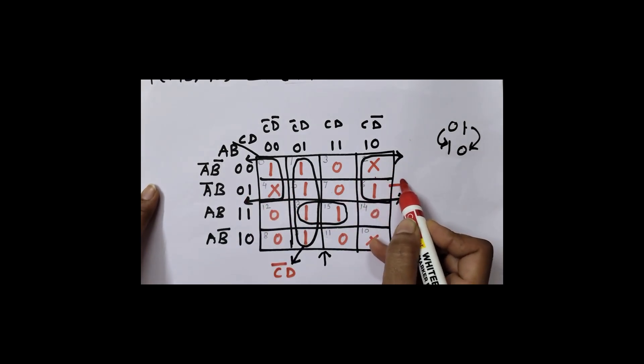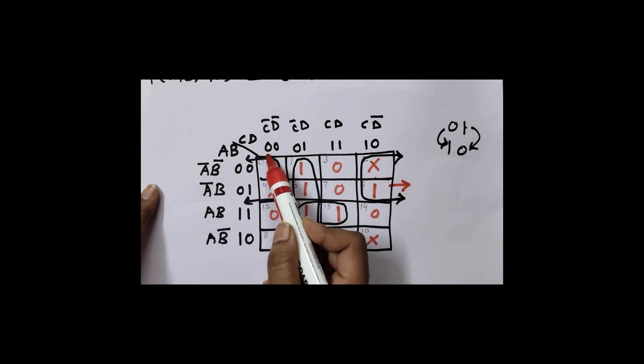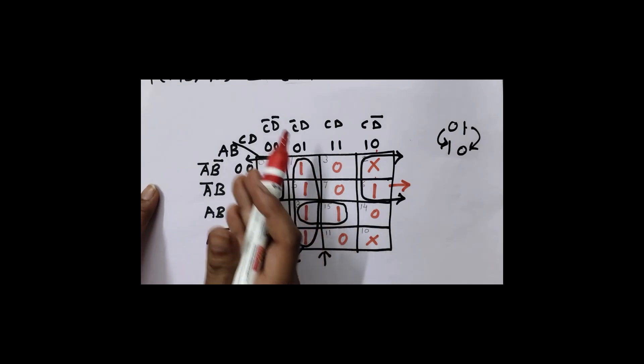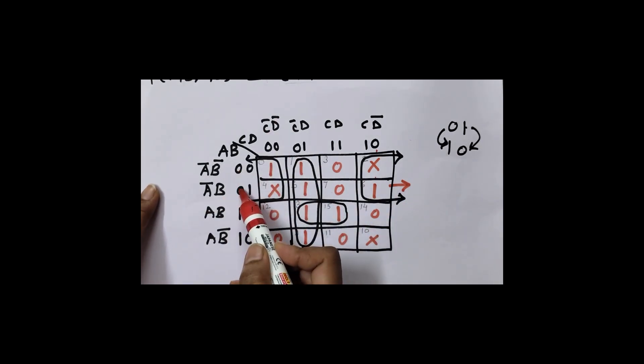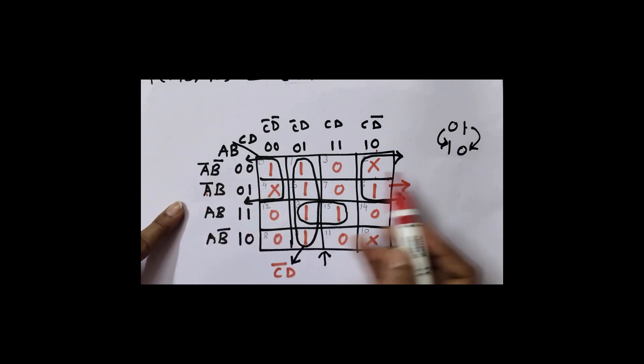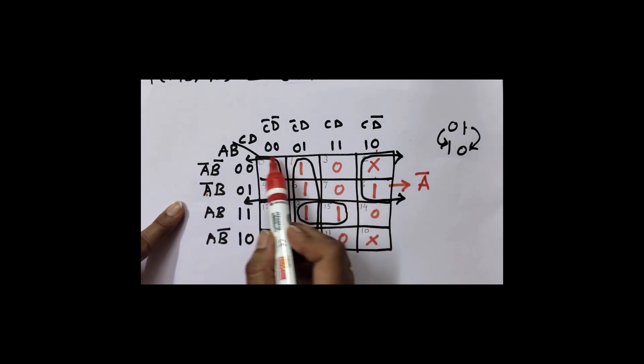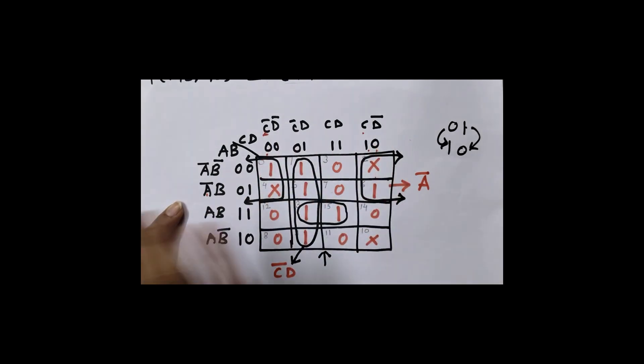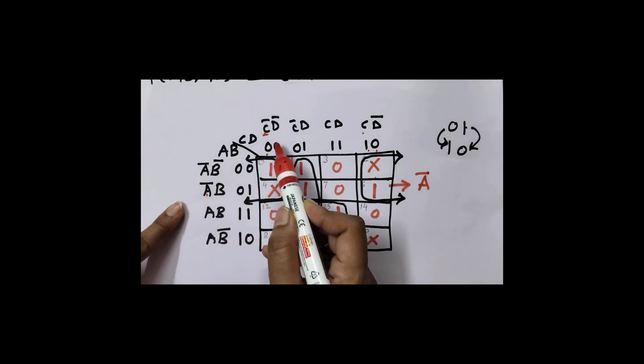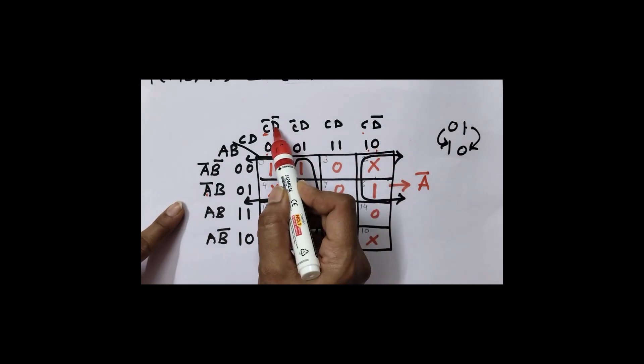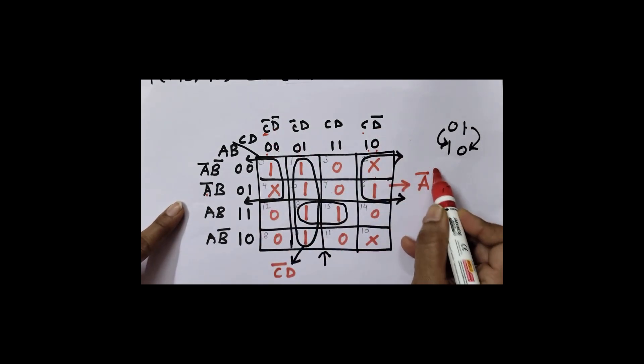Then for this quad the equation will become, see I have 2 columns and I have 2 rows. So I will check what is common in rows. What is value of B? 0, 1. Values are different, so we will discard B. Value of A is same and that value is A bar. So I will write A bar. And here in columns what is same? C is 0, 1 or C bar, C, so that is not common. So I will skip C. What about D? D is 0 here, here it is also 0. So D bar, so A bar D bar.